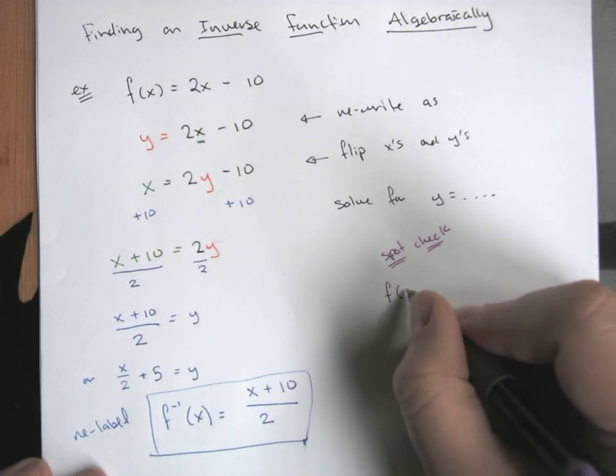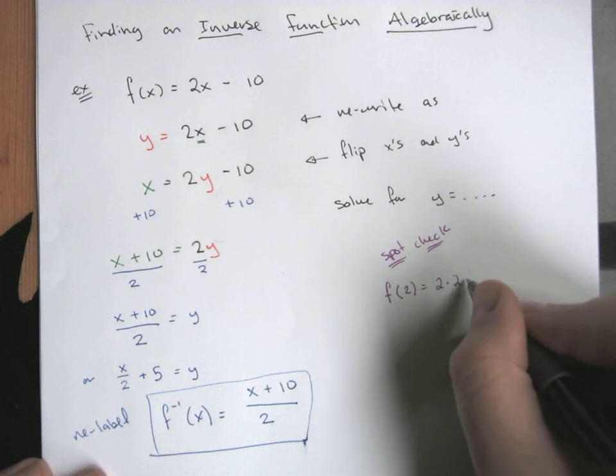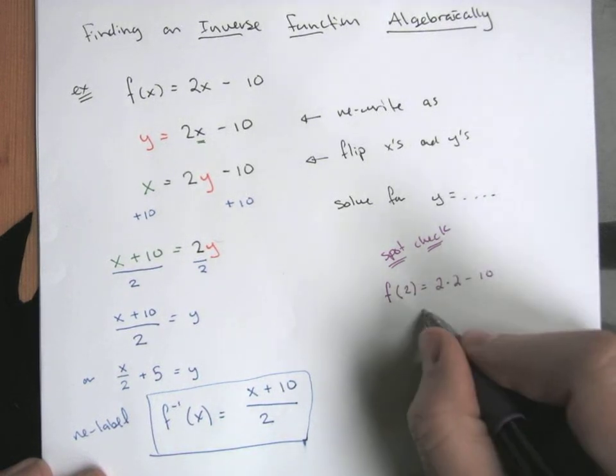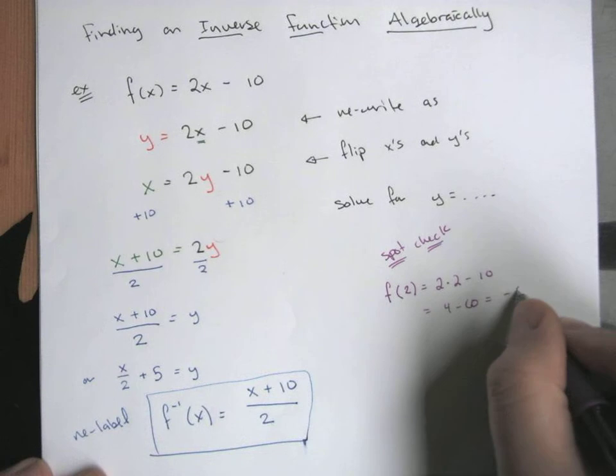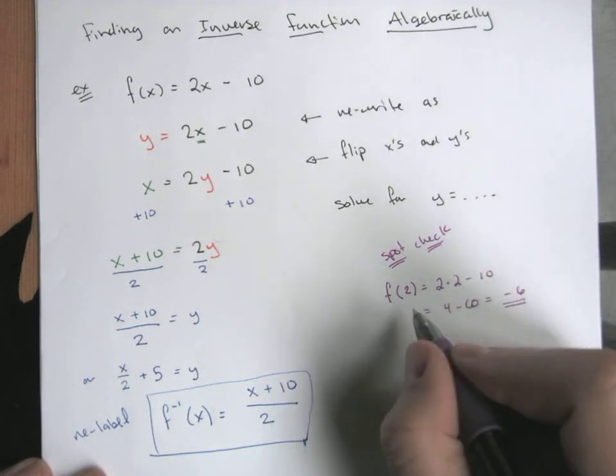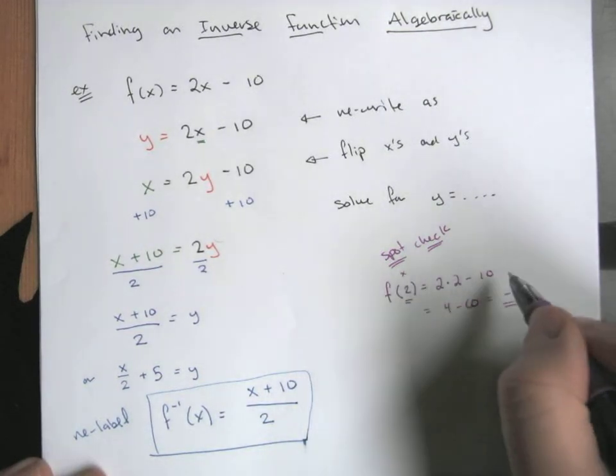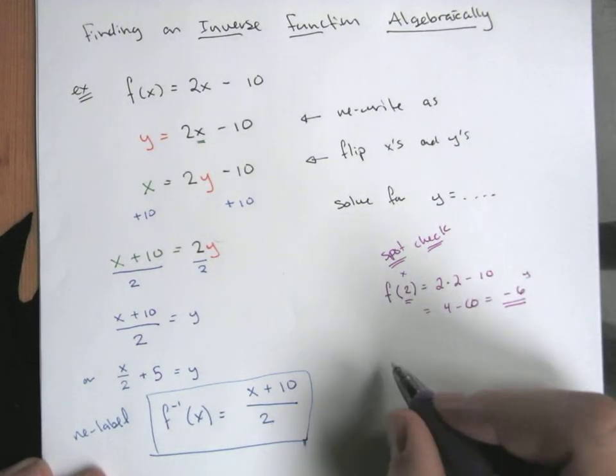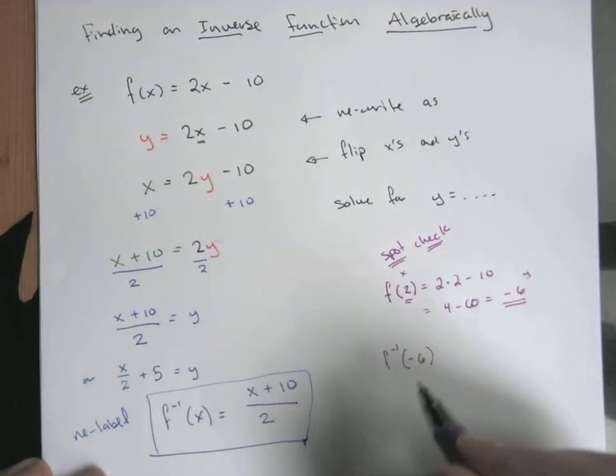Rather than go deep into the algebra there, if we just pick a specific point, let's do f of x with x is positive 2. That would be 2 times 2 minus 10, so that's just 4 minus 10 is negative 6. So x equals 2 is going to take me to negative 6. So this should be my x and my y.